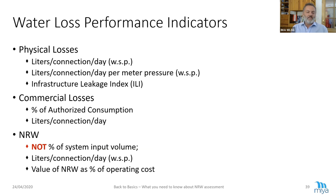Water loss performance indicators. For physical losses we have: liters per connection per day when the system is pressurized (WSP) — we always need to normalize it to get a comparable value; liters per connection per day per meter pressure; and then an excellent indicator also invented by Mr. Lambert: the Infrastructure Leakage Index, the ILI. This is by far my preferred indicator, and I'll show you later why.